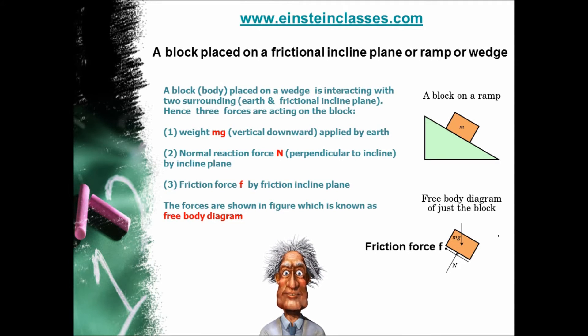Due to which two contact forces are acting on the block. One is normal reaction by incline surface of ramp which is perpendicular to the incline in the direction shown in figure. Other contact force by the frictional incline surface is the friction force on block which is acting along the direction shown in figure. The frictional force is arising because the block has the tendency of relative motion down the incline surface.